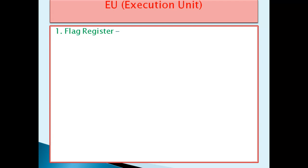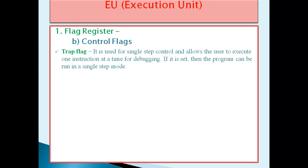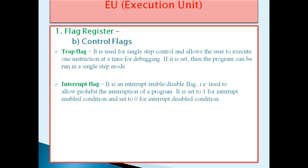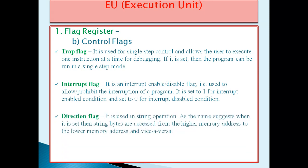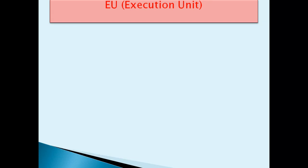The second flag register contains Control Flags. The first is the Trap Flag, used for single-step control, allowing the user to execute one instruction at a time for debugging. If it is set, the program runs in single-step mode. The second is the Interrupt Flag, an interrupt enable or disable flag used to allow or prohibit interruption of a program — set to 1 to enable, 0 to disable. The third is the Direction Flag, used in string operations: when set, string bytes are accessed from higher to lower memory address, and vice versa.